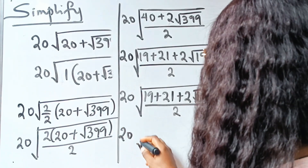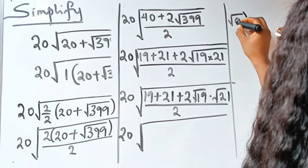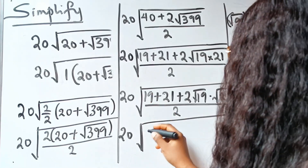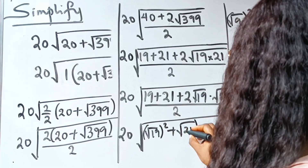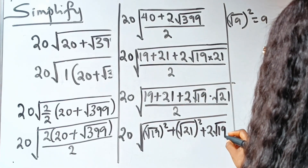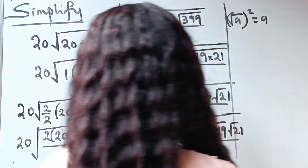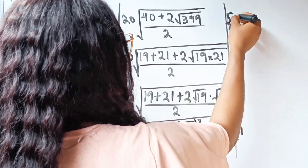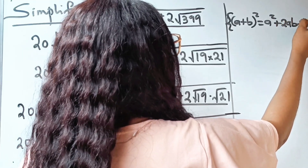We can write 19 as (square root of 19) squared and 21 as (square root of 21) squared, plus 2 times root 19 times root 21, all divided by 2. Now remember that (A plus B) squared equals A squared plus 2AB plus B squared. If you look at this, you can see that A is root 19, B is root 21, and this is 2AB.